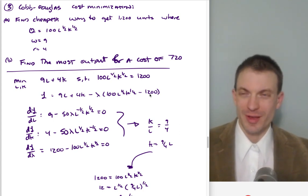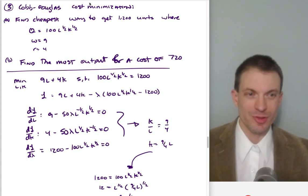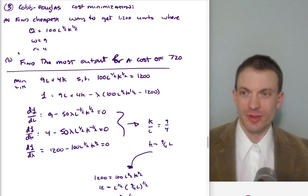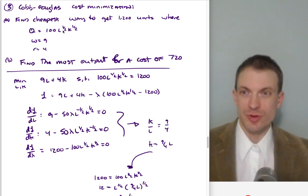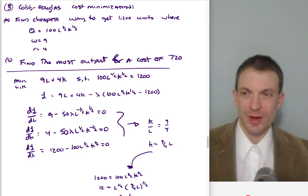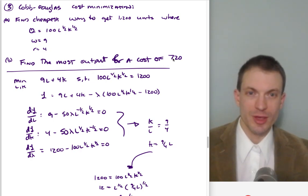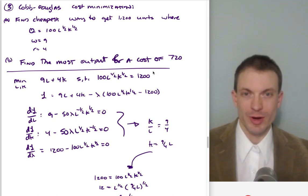Hello and welcome. I'm going to do a Cobb-Douglas cost minimization problem. The exercise is: find the cheapest way to get 12,000 units given this production technology and these relative wages and rental rate of capital, and find the most output that can be produced for a cost of $720.